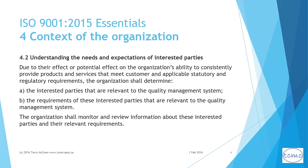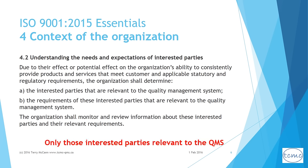Clause 4.2 — Understanding the Needs and Expectations of Interested Parties. A lot of people and entities could be considered interested parties: for instance, shareholders and owners of the business, government agencies and regulators, clients and customers, employees and their families, trade unions, suppliers and partners, emergency services like firefighters, police, and ambulance, and media. However, we only need to identify those interested parties and their requirements that are relevant to the QMS, because they have an effect or potential effect on the organization's ability to meet product or service requirements. This information needs to be kept current.